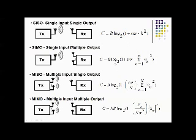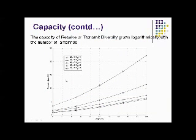Comparing the four equations, a parameter N is introduced which is nothing but the number of transmitting and receiving antennas. Thus, using MIMO technology, the channel capacity — that is, the data rate — can be increased by increasing the number of transmitting and receiving antennas. The lowest graph is for one transmitting and one receiving antenna, whereas the highest graph is for four transmitting and four receiving antennas.